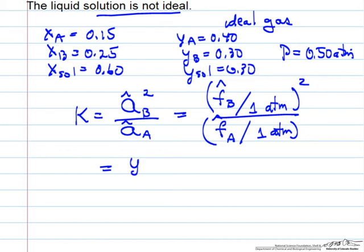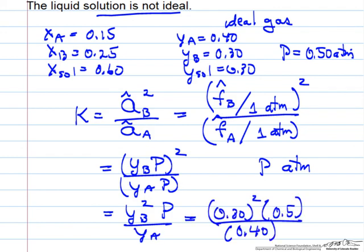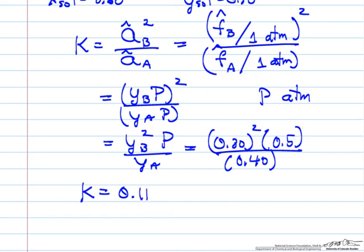Fugacity for an ideal gas is just the partial pressure. So I can convert fugacities to partial pressures, and I have to keep in mind that this means pressure must be in atmospheres, so one of these pressures cancel, and I have mole fraction of B squared times the pressure over the mole fraction of A. So the equilibrium constant is 0.112.